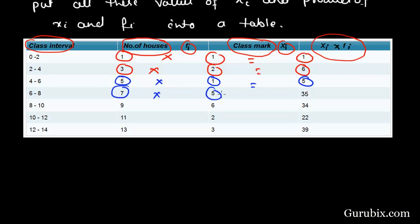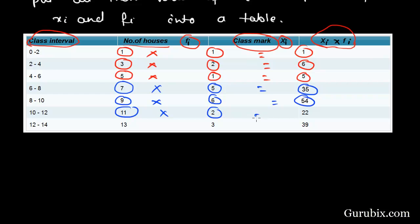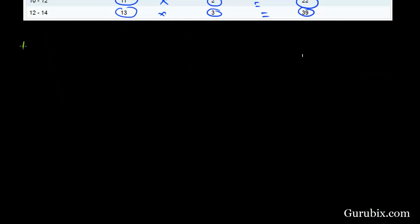7 into 5 is equal to 35, 9 into 6 is equal to 54, 11 into 2 is equal to 22, and 13 into 3 is equal to 39.